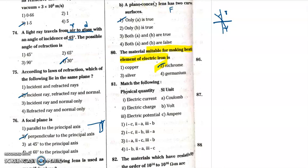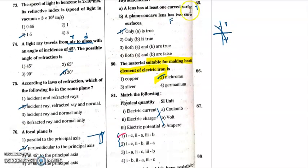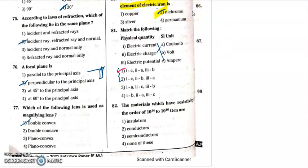Question 81: match the following. Current unit is ampere. Electric charge unit is coulomb. Electric potential or potential difference unit is volt. So the first option is the correct option.